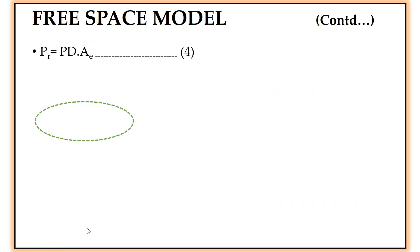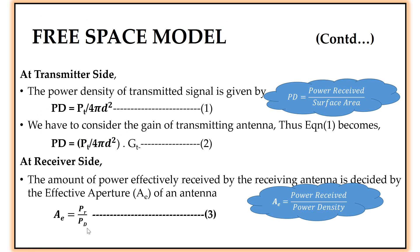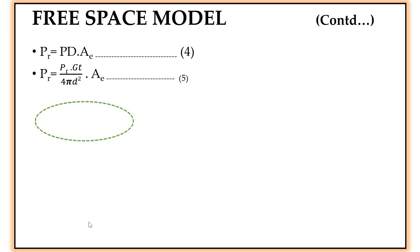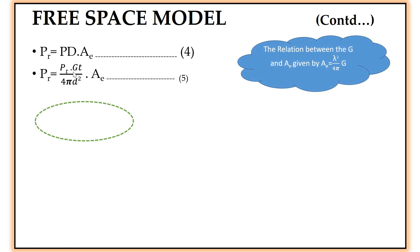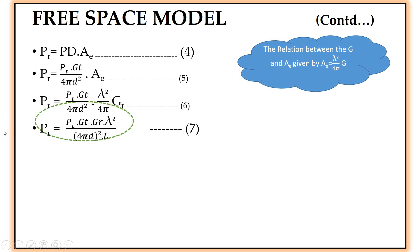Now considering the relationship between gain g and effective aperture ae: ae = λ² / (4π) × g. Substituting this ae into the power equation and simplifying, the received power equals the transmitted power times the gain of the transmitting antenna times the gain of the receiving antenna times λ², divided by (4πd²) times L, where L is the system loss factor. This equation is called the Friis free space equation: pr = pt·gt·gr·λ² / (4πd²·L).